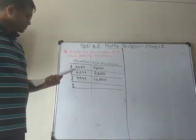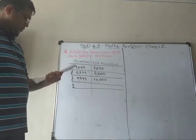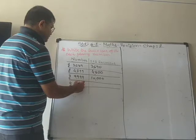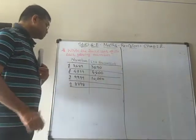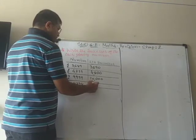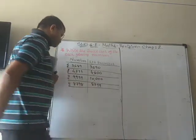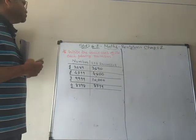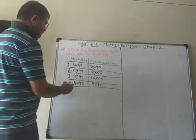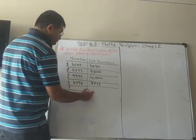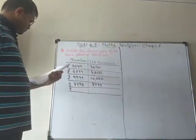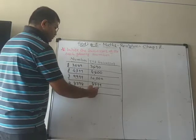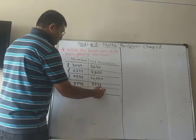Another number: 8799. So the successor will be 8800. It is very simple to write down the successor of given numbers. For example, four thousand eight hundred and forty — its successor will be four thousand eight hundred and forty-one.